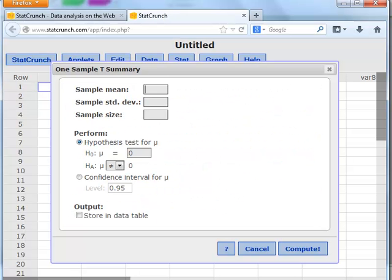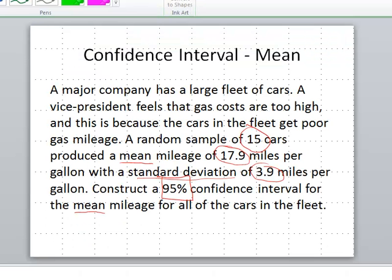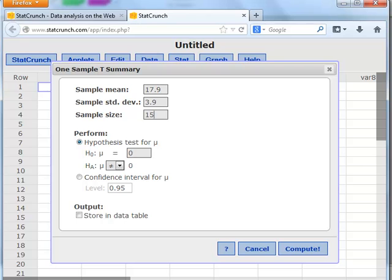The standard deviation was 3.9, and the sample size was 15 cars. So we'll type in 15 for the sample size. We wanted a confidence interval, so we clicked that radio button. It was 95%, so we'll leave that alone. Click Compute.